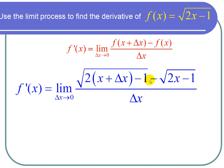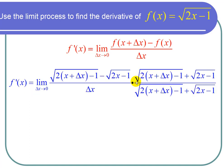So I'm going to multiply top and bottom by the square root of 2 times x plus delta x minus 1, and then plus the square root of 2x minus 1, and then we divide by the same thing.